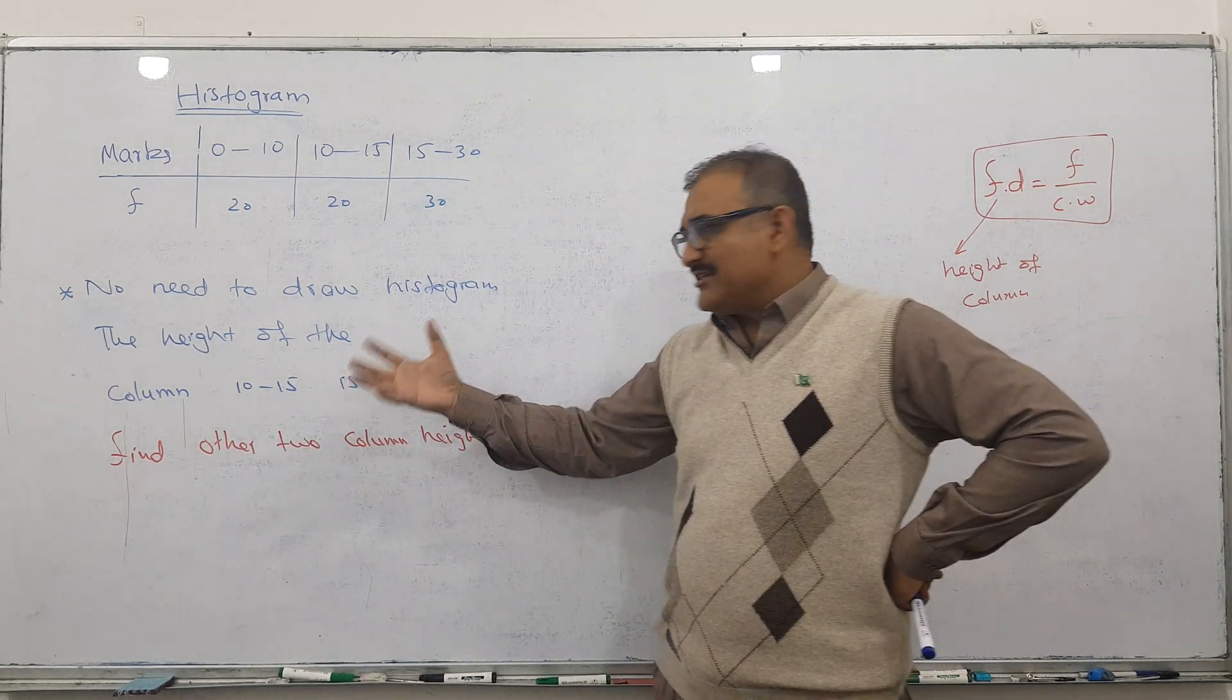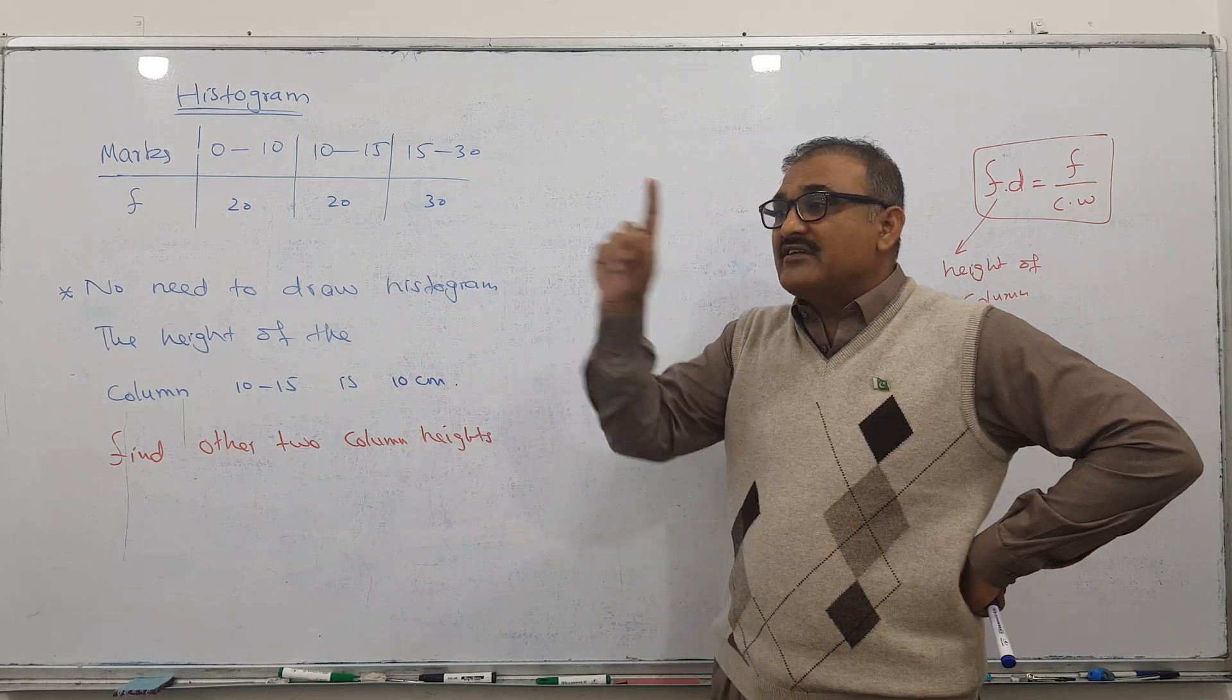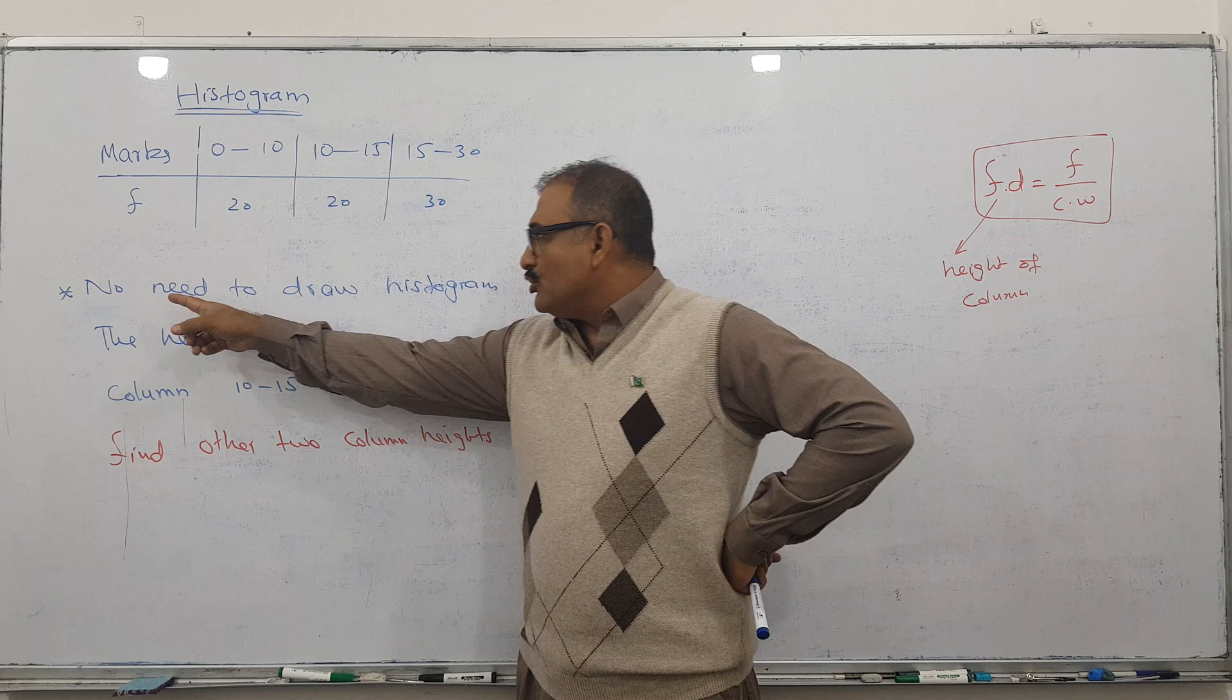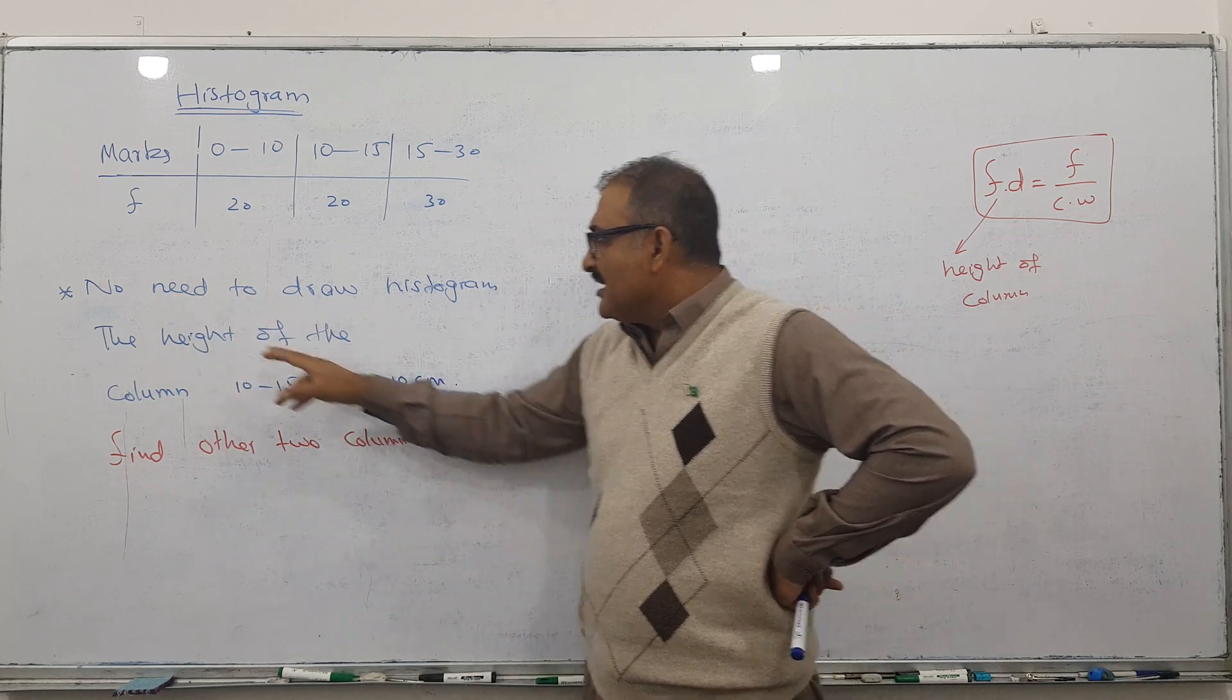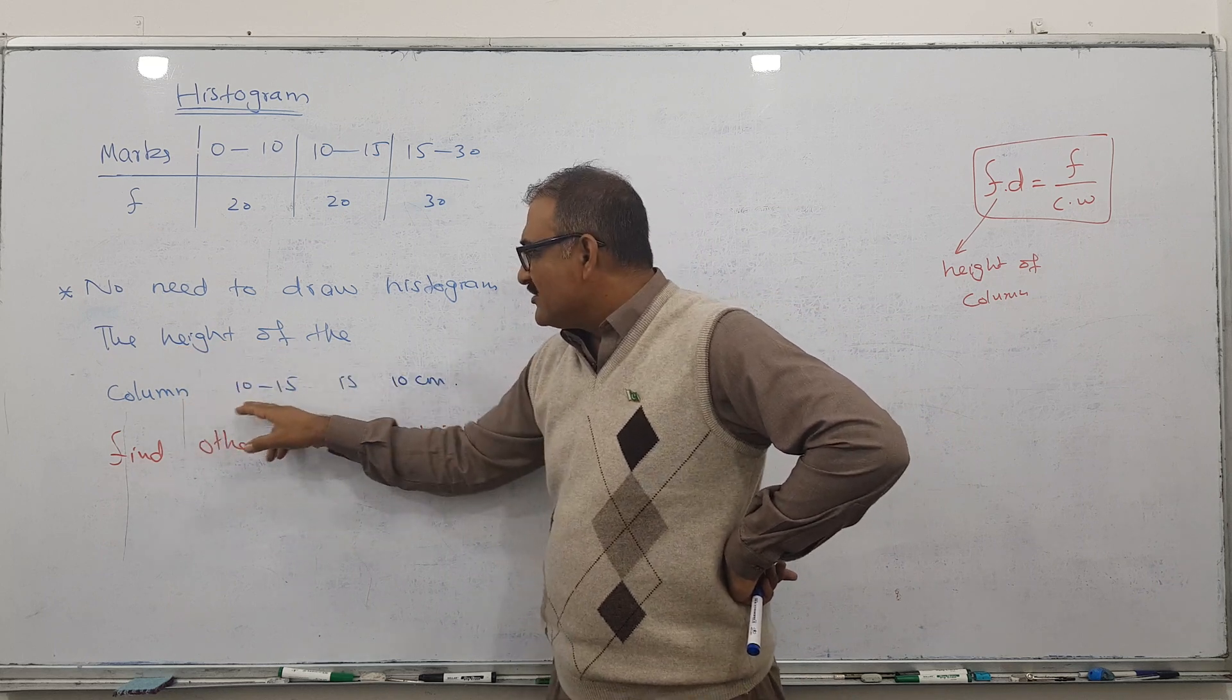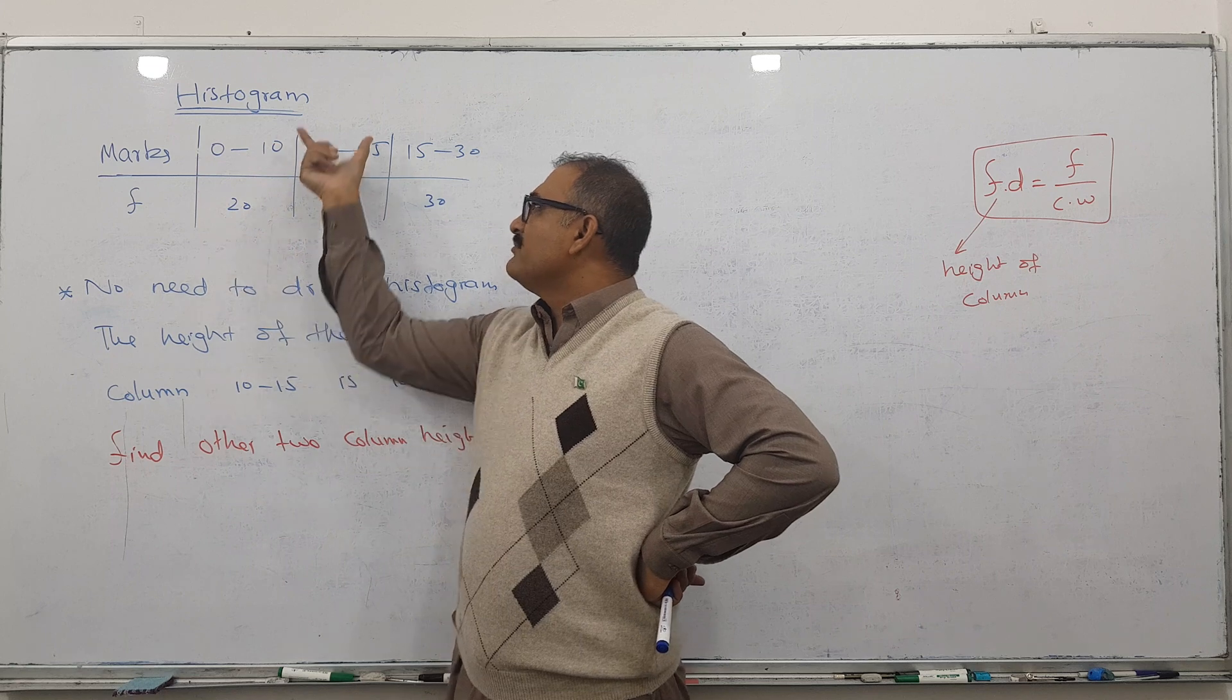What he's given us is one particular height. Sometimes he will clearly mention the height of a column. For example, the height of column 10 to 15. We have three columns for marks: 0 to 10 is the first column, second, and third. The middle column height is given.